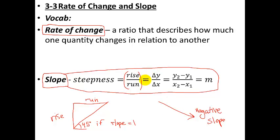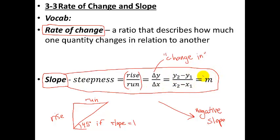Now let's look at the numerical values of slope. Slope is defined as the change in y over the change in x. The delta symbol means 'change in' — you'll be using this in science as well. It's the Greek letter delta. So change in y is y2 minus y1 (the final value minus the initial value), over delta x, which is x2 minus x1. The letter we use for slope is m — you may have learned y equals mx plus b, where m represents the slope. All these expressions mean the same thing.